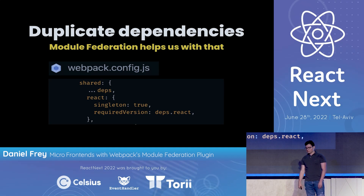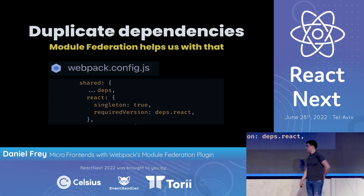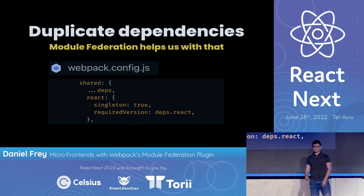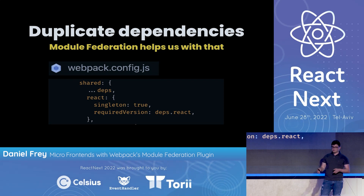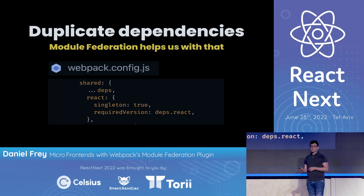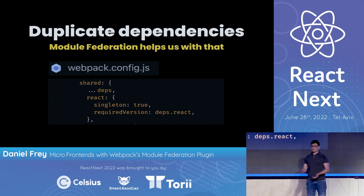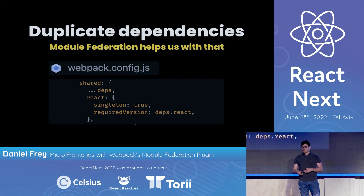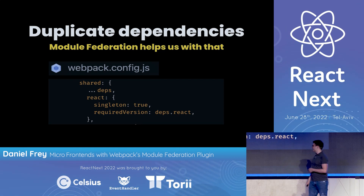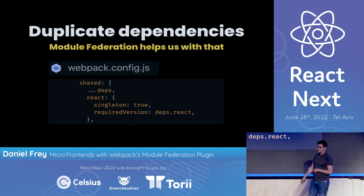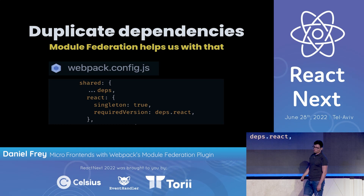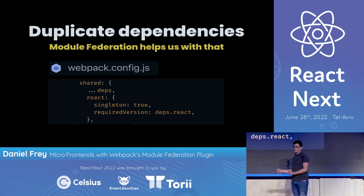Let's dive into some obvious questions. First: duplicated dependencies. You've seen me using React, and there were many React applications on one page. Aren't you using React more than once, or different versions of it? The answer is no. With Webpack Module Federation, we have an object called 'shared' where we can specify values we don't want duplicated, ensuring they are not loaded more than once.